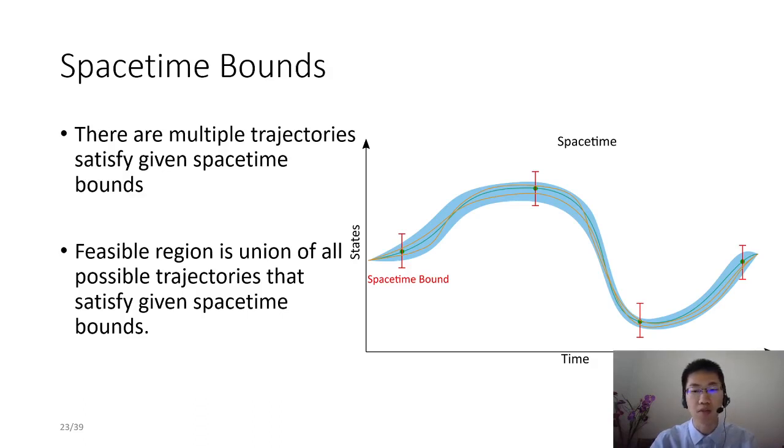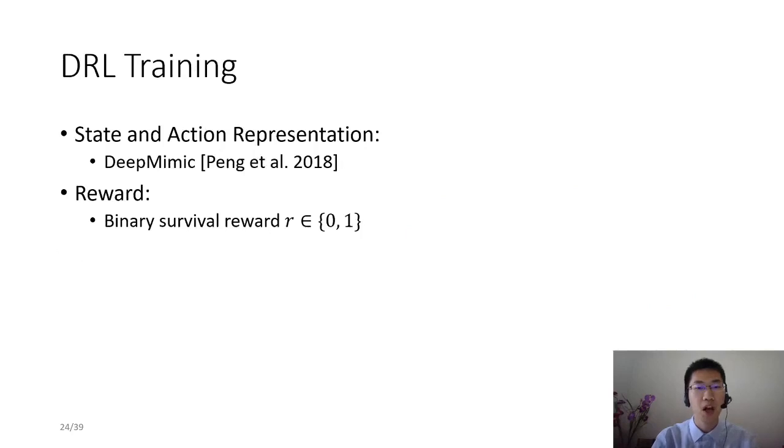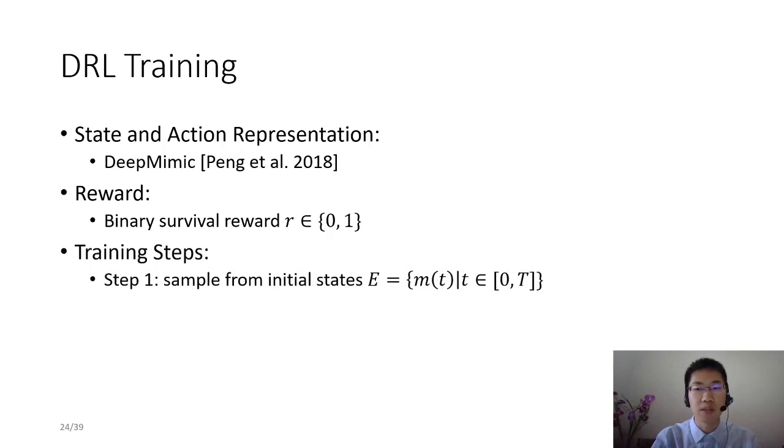So how to learn motor skills via spacetime bounds in DRL system? We use similar state and action representation as deep mimic and binary survival reward for the learning. During training, we first sample from initial states, which is the reference trajectory. We adopted some initial state adaptation schemes to improve the robustness of training. Please refer to our paper for more details.